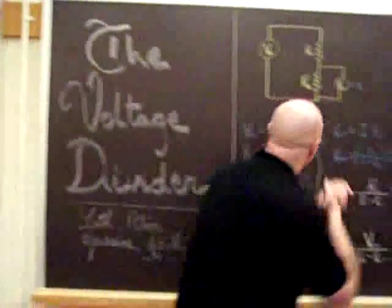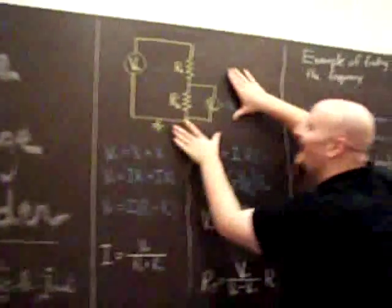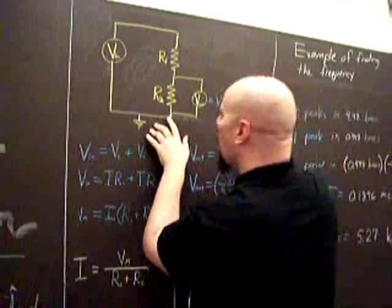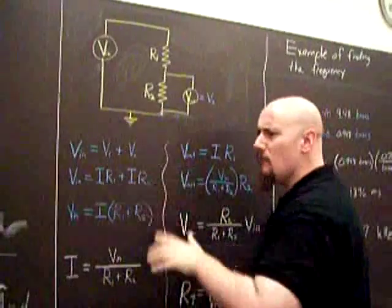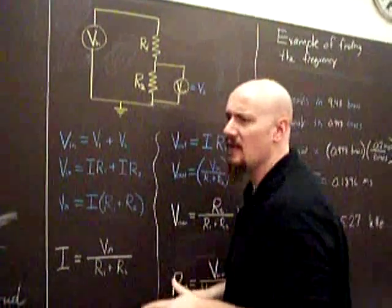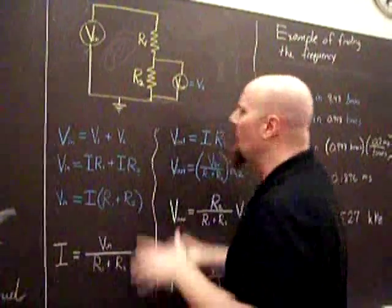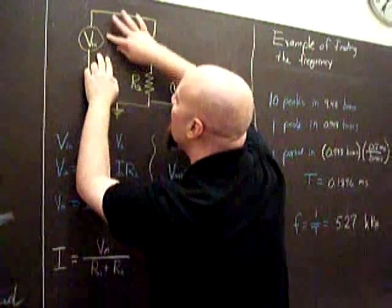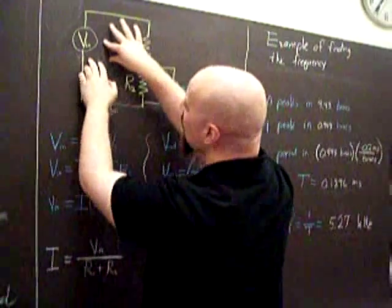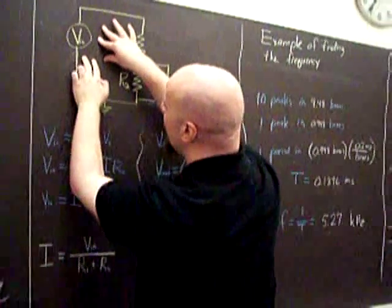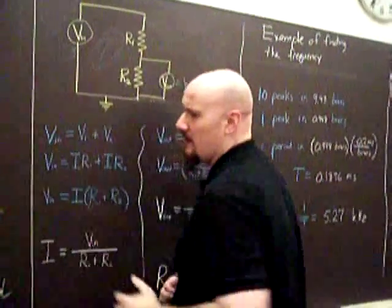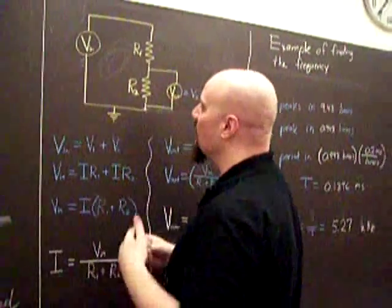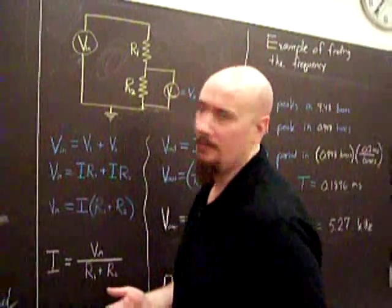The voltage divider is probably one of the most common circuit elements you'll see in all of electronics. It starts with some V-in. For us it will be an EMF, but it's denoted V-in because a voltage divider could be just one piece of a larger circuit.